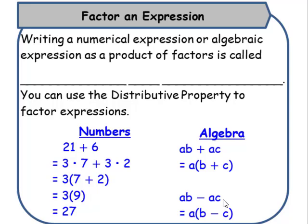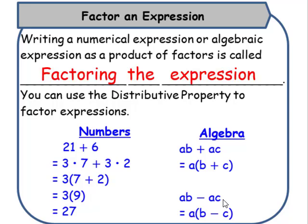Writing a numerical expression or algebraic expression as a product of factors is called factoring their expression. So when we see, when we're trying to factor this expression, 21 and six is divisible by what same number? In this case, it would be three. Then we can rewrite it as three times seven plus three times two. Now we can factor out the three, and it's going to be three times the quantity seven plus two.